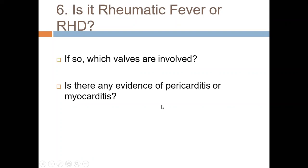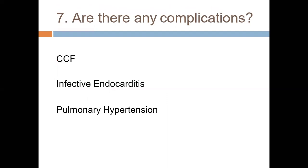In Kawasaki disease, what you look for is the coronary arteries: the left main stem, left branches, circumflex branches, and the right coronary artery. This is associated with myocardial dysfunction and other systemic involvement.